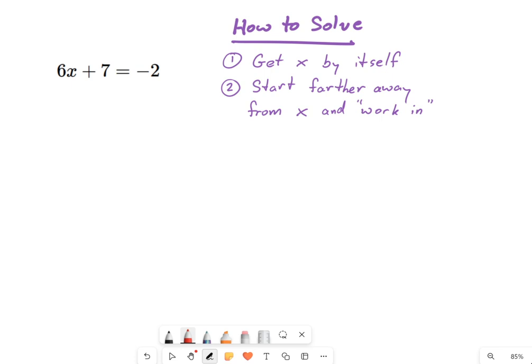And when I say farther away from x, look over here. There's a few things that make x not by itself: the 6 and the 7. Because the 7 is further away, that's where I'm going to start.